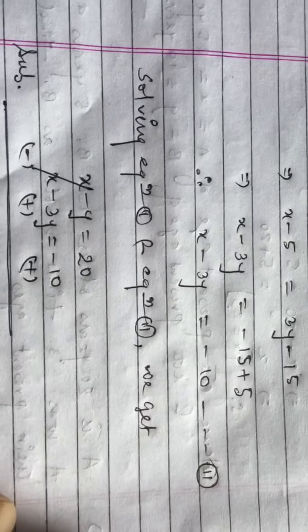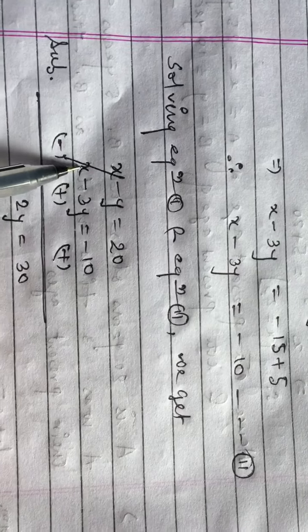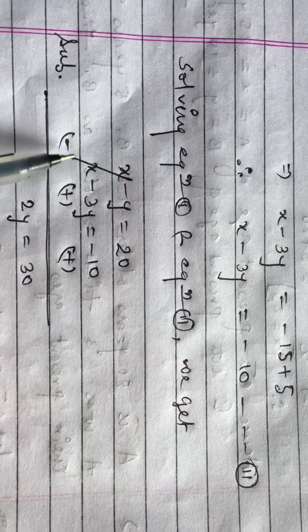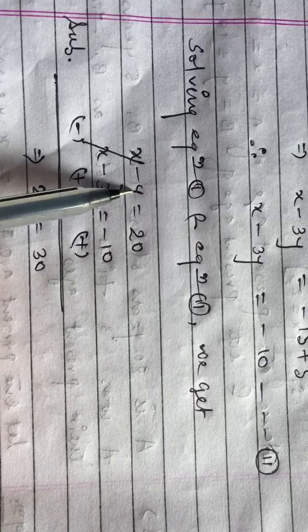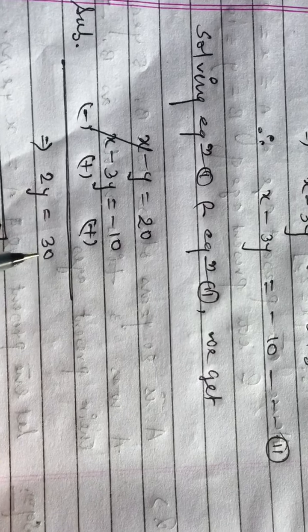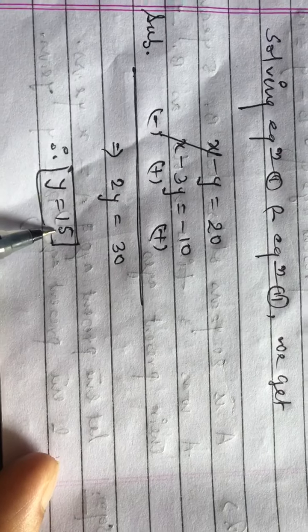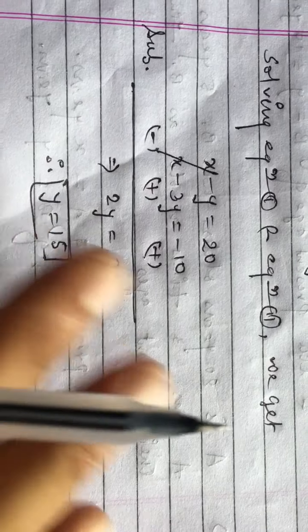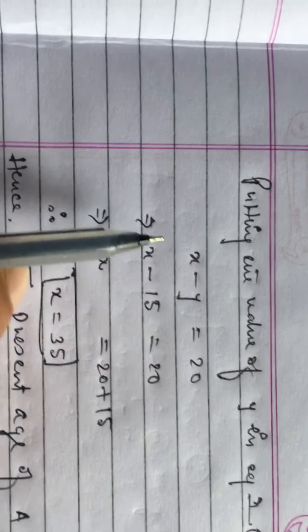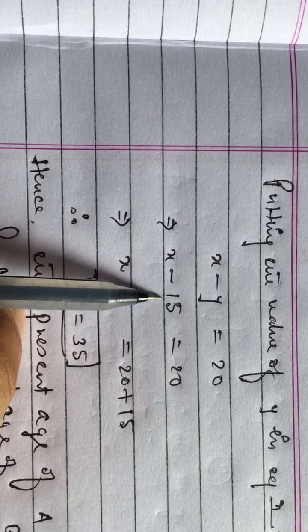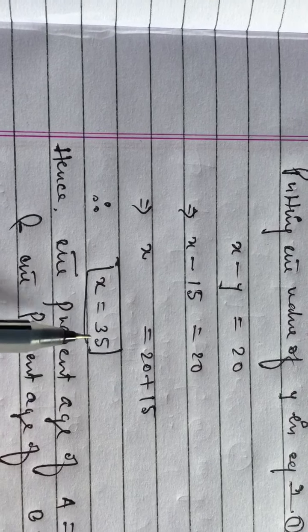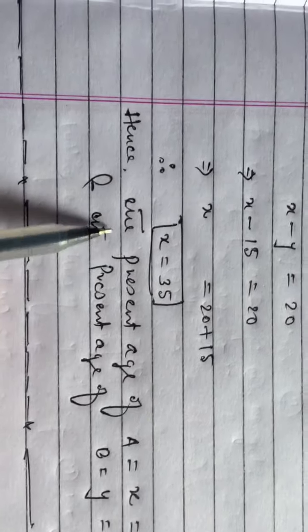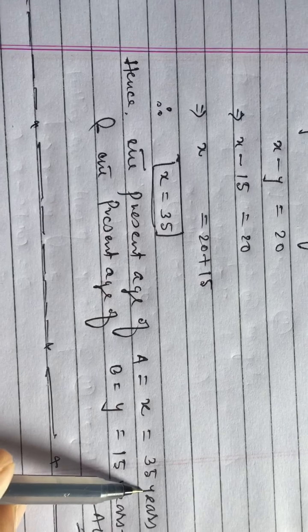Solving equations 1 and 2: Equation 1 is x minus y = 20, and Equation 2 is x minus 3y = minus 10. Subtracting Equation 2 from Equation 1: minus y minus (minus 3y) = 20 minus (minus 10), giving 2y = 30, so y = 15. Putting y = 15 into Equation 1: x minus 15 = 20, so x = 35. Hence the present age of A is 35 years and the present age of B is 15 years.